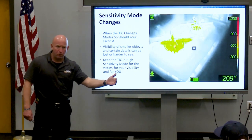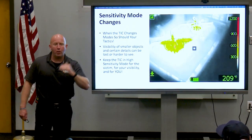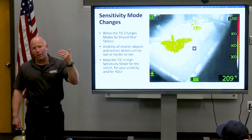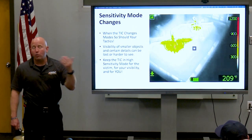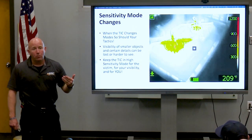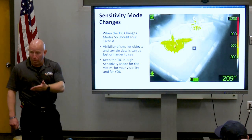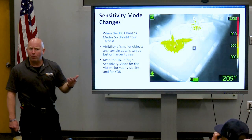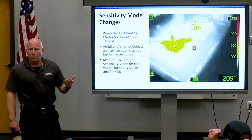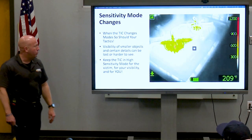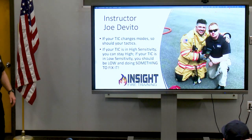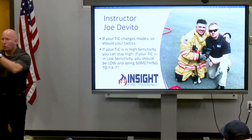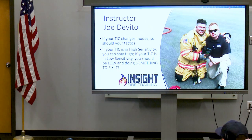If the victim's alive or just recently deceased, they are known as an active emitter. Their body's trying to regulate temperature, so they will show up dark unless buried under something. If they've been dead a while, they're going to blend in with the background because they're simply a sponge. Great friend of mine and fellow instructor Joe DeVito says this best: if your TIC changes modes, so should your tactics. Please remember that.